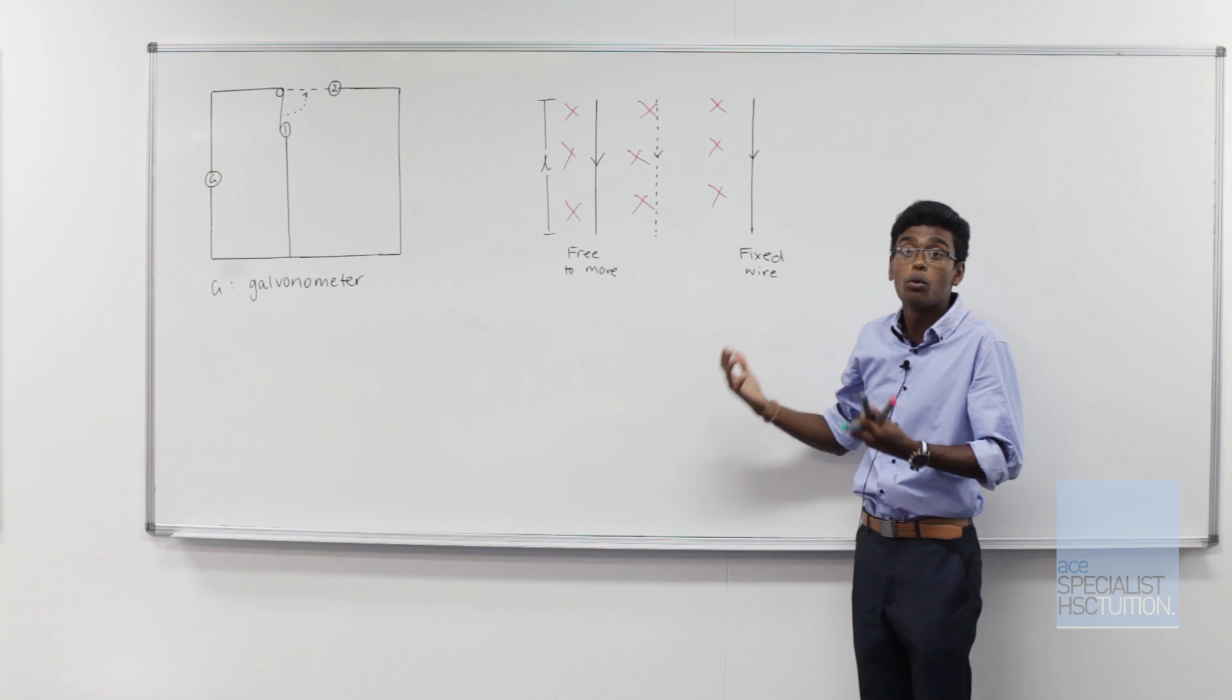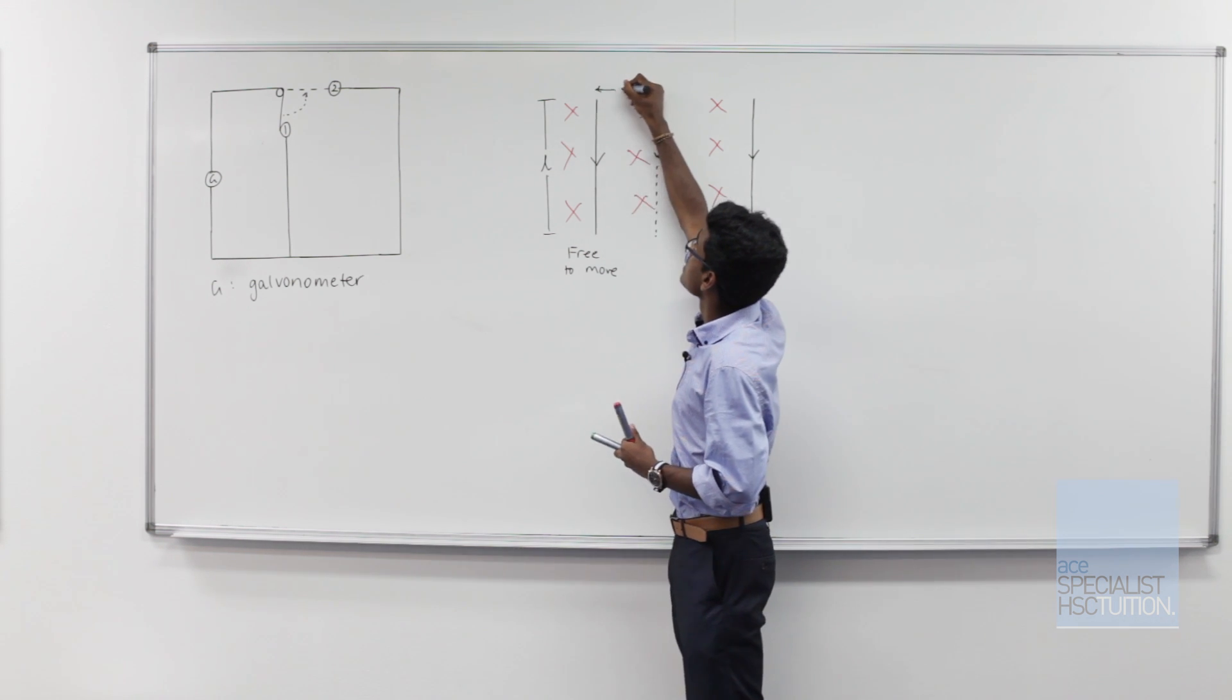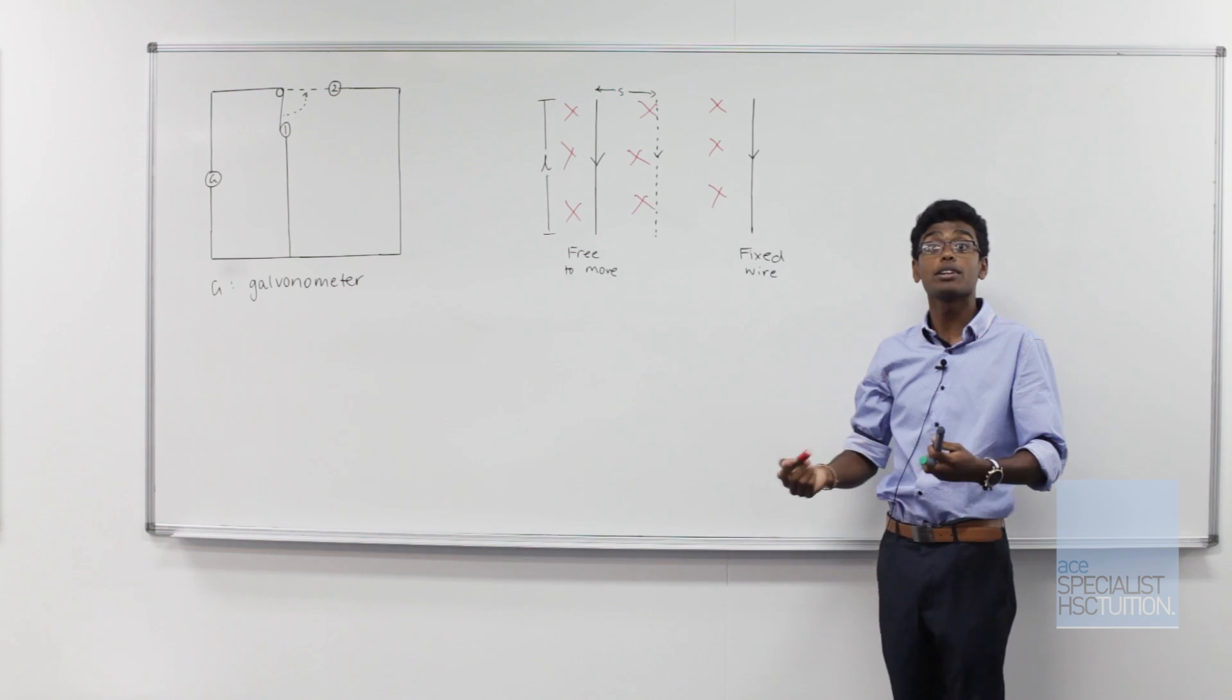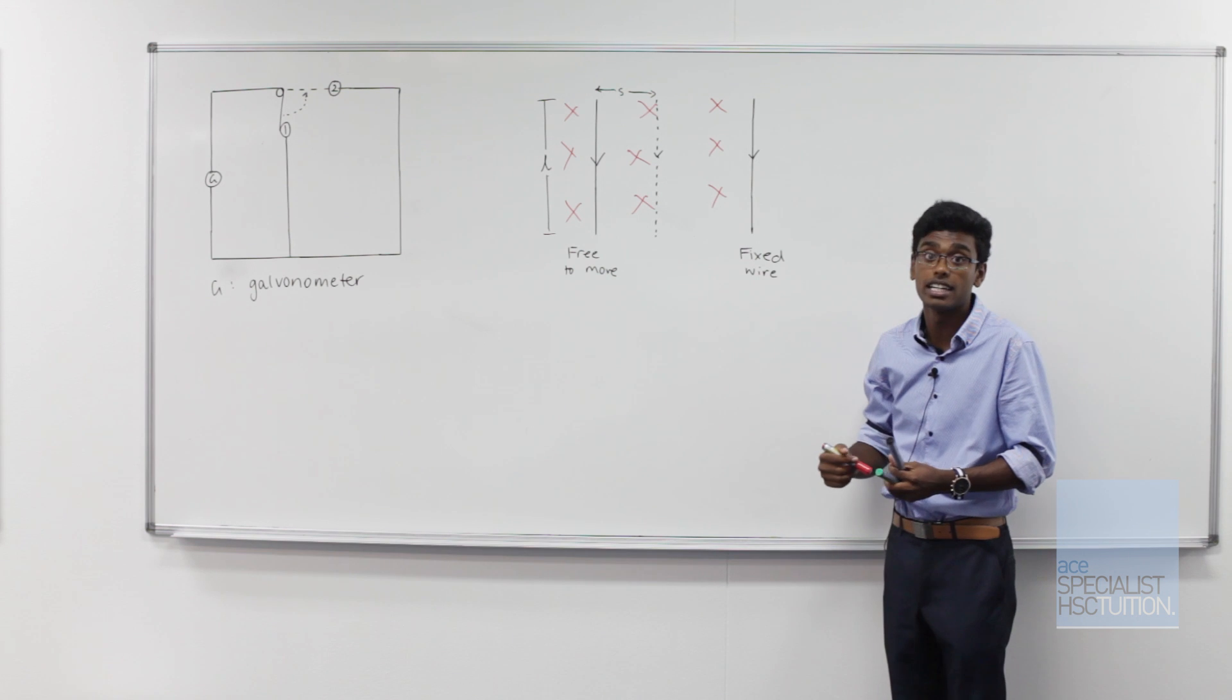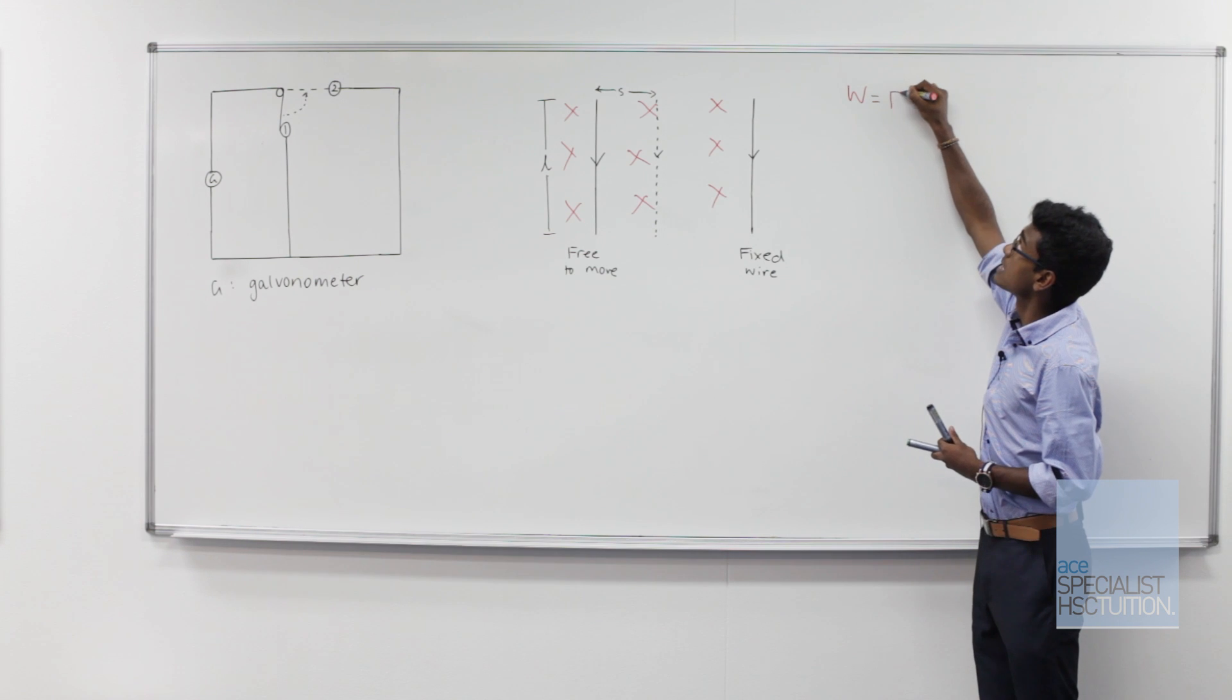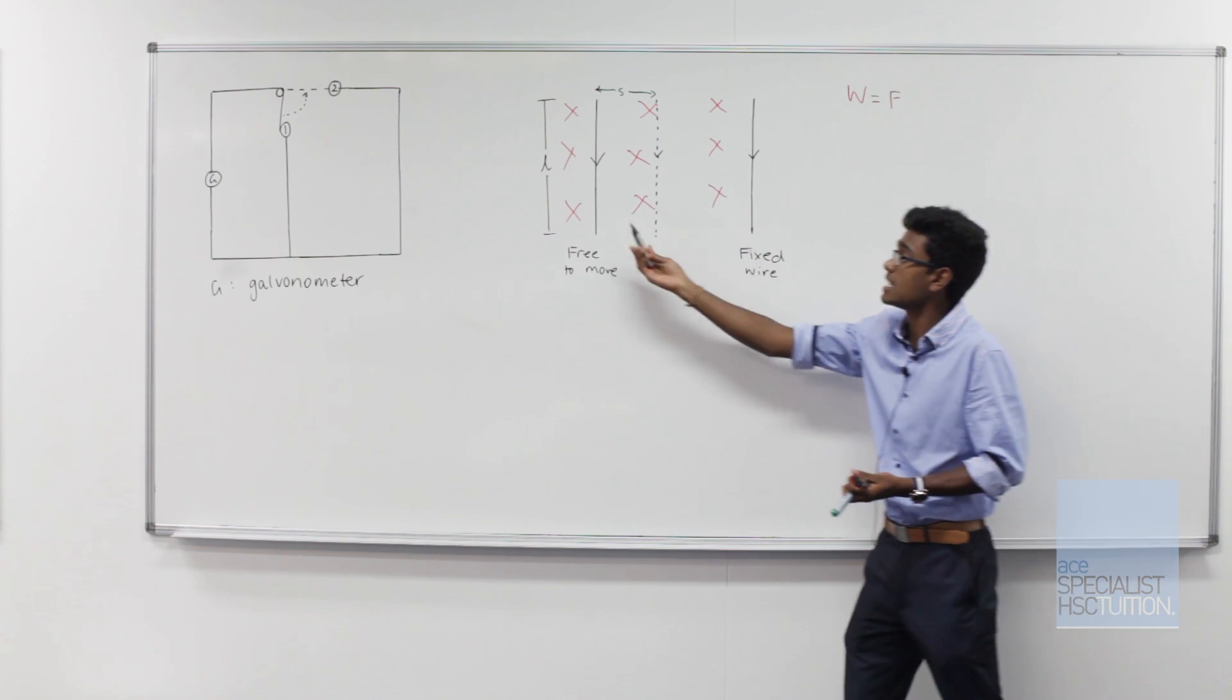We can say that our wire has been displaced by a distance of s. Let's now consider the work that's been done here. We know that work is equal to force times the change in displacement, in this case s.